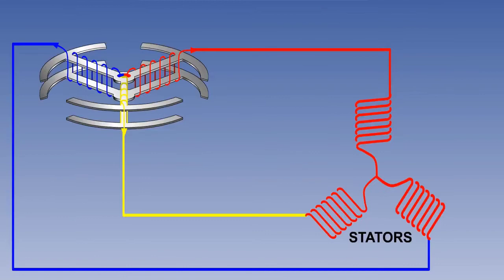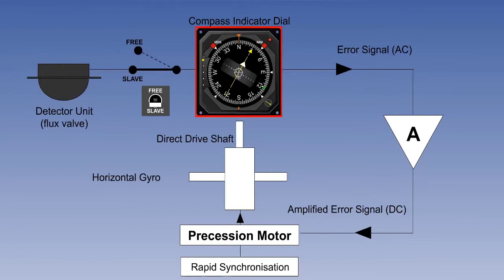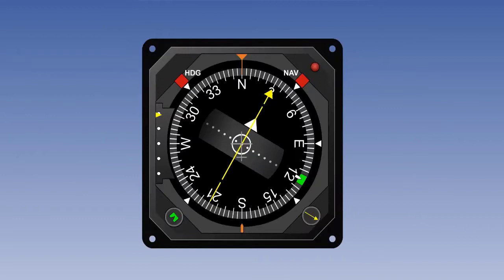We are now going to examine some of the components more closely and also add some new ones. The first one to look at in more detail is the compass indicator dial. Here is a typical modern compass indicator dial. As we know, the compass card is directly driven by the shaft from the gyro. It rotates as heading changes, and the heading is read against the index line in the 12 o'clock position, which is sometimes called the lubber line.